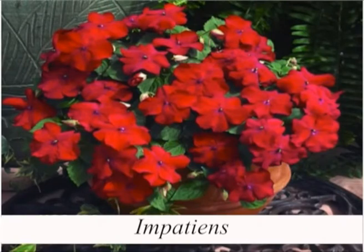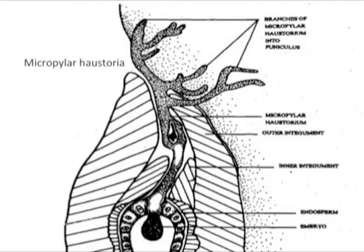The micropylar cell undergoes further divisions to form the endosperm tissue. In the plant Impatiens, the first division forms a small micropylar chamber and a large chalazal chamber. The micropylar cell divides transversely to form three cells, of which the uppermost cell forms a haustorium with branches. The chalazal chamber forms the endosperm.